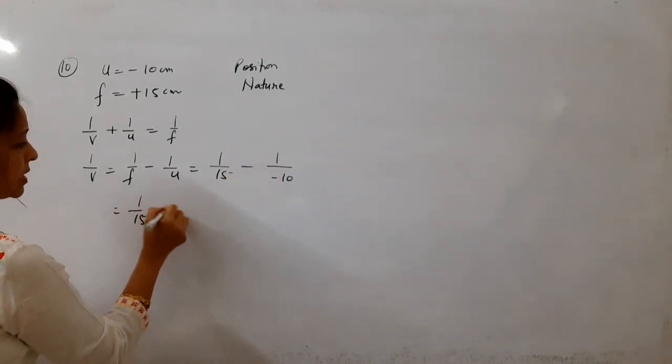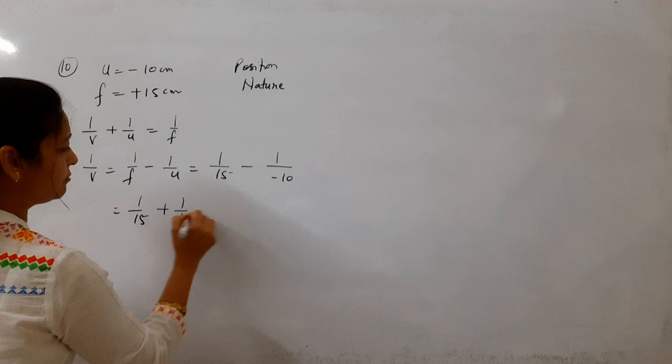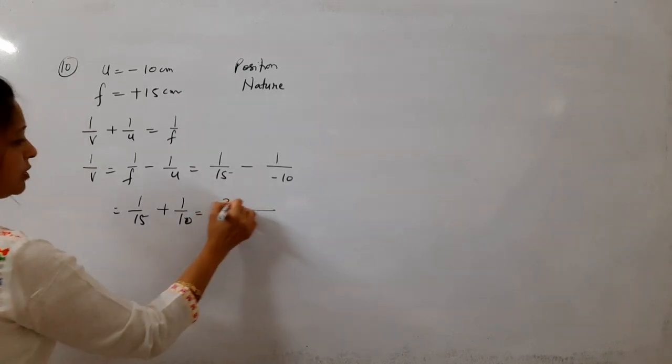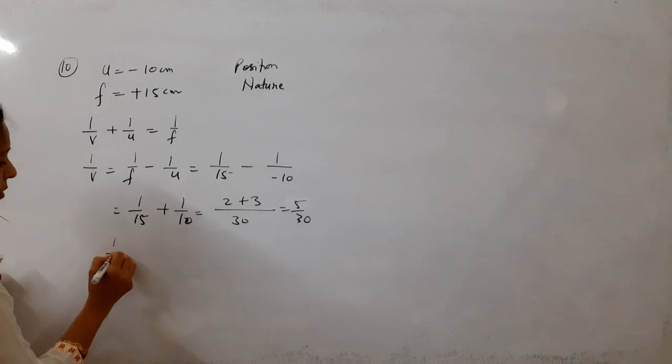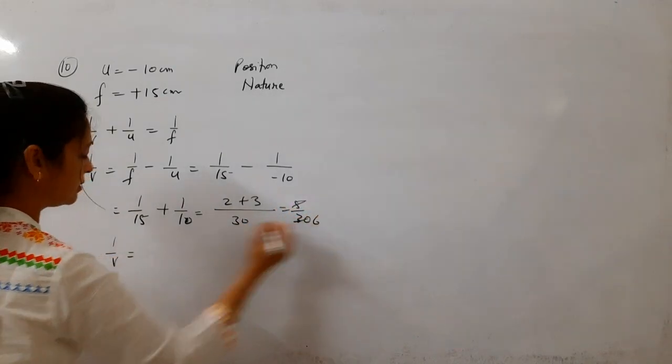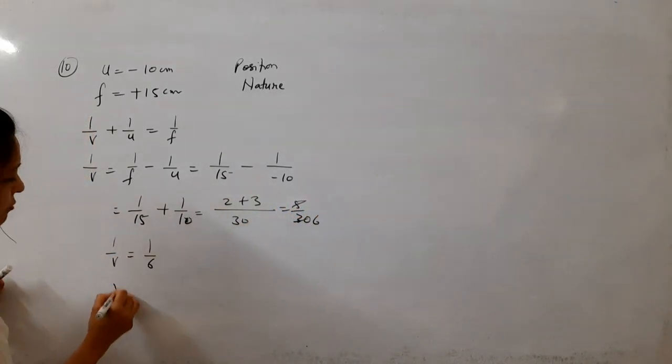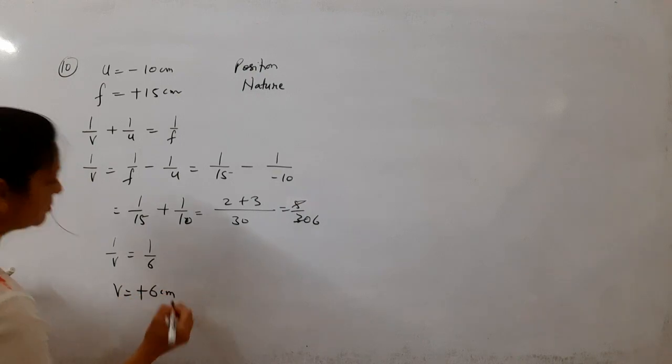Here minus into minus plus will be. Now we take LCM of 15 and 10, LCM of 30. 15 by 2, 10 by 3, 5 by 30. So 1 by v is 1 by 6. So v will be plus 6 cm.